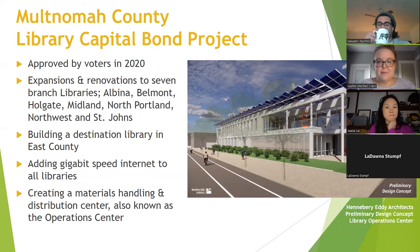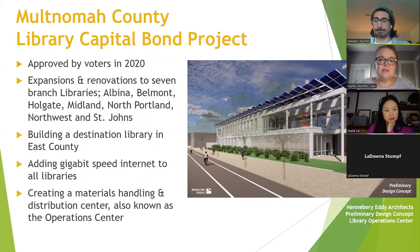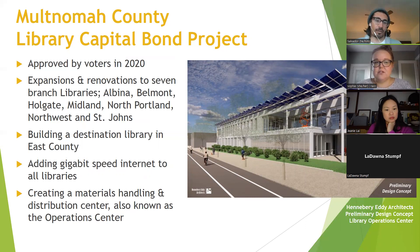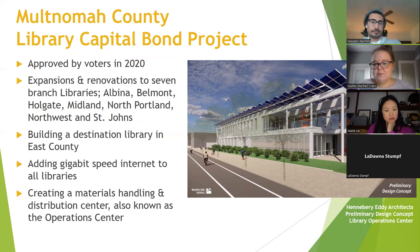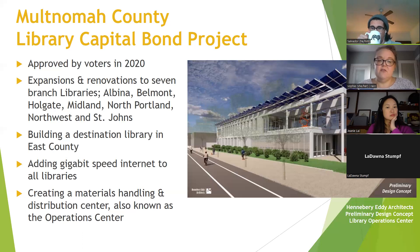To give an overview of the library capital bond project: this was a bond passed in 2020 that includes expansions and renovations to seven branch libraries — Albina, Belmont, Holgate, Midland, North Portland, Northwest, and St. John's. There's also a destination library being built in East County, new internet upgrades at all facilities, and a new materials handling and distribution center being built in Southeast, close to Midland and not far from Holgate.